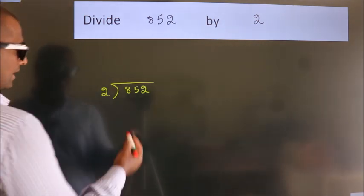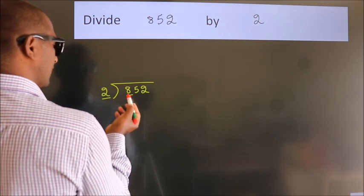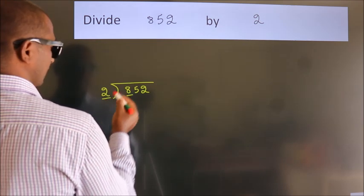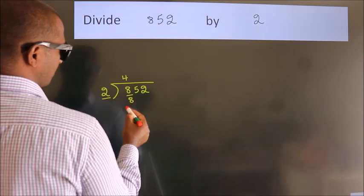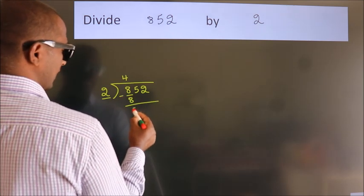Next, here we have 8, here 2. When do we get 8 in 2 table? 2 4s, 8. Now we should subtract. We get 0.